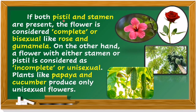If both pistil and stamen are present, the flower is considered complete or bisexual, like rose and gumamela. On the other hand, a flower with either stamen or pistil only is considered incomplete or unisexual. Plants like papaya and cucumber produce only unisexual flowers. Cucumber and papaya are unisexual, while gumamela and rose are considered complete or bisexual plants.